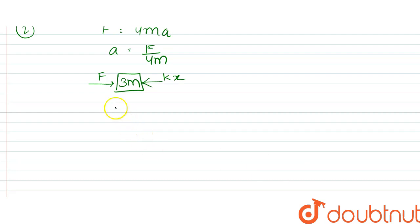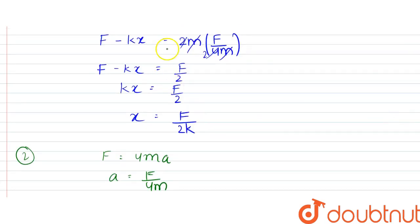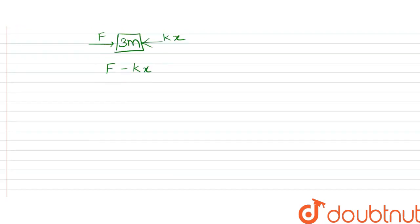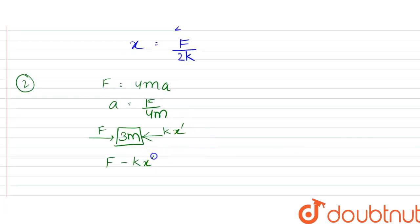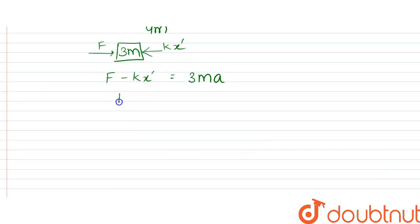Now due to this we can write that F minus kx would be equal to 3ma. So let's mark it x dash, so that would be equal to 3ma. So F minus kx dash can be written as 3F by 4. So kx dash can be written as F by 4.